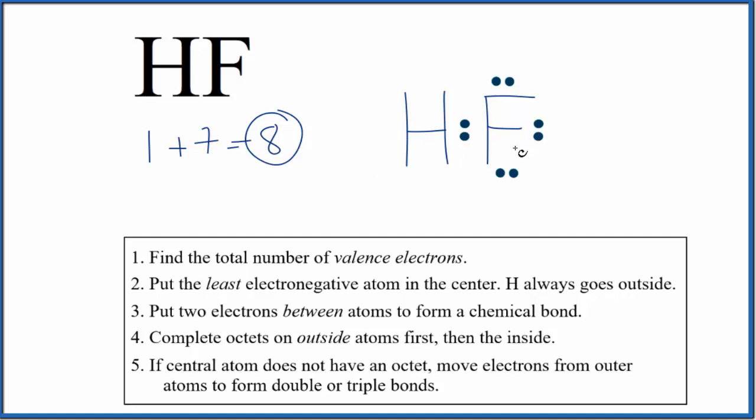Because there are only two atoms, we would consider this to have a molecular geometry that is linear with a bond angle of 180 degrees. This is Dr. B with the Lewis dot structure for HF. Thanks for watching.